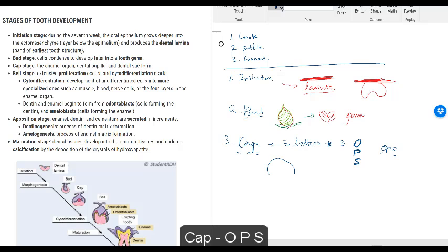For you to remember that OPS - those three different things happen in the cap stage, not in the initiation or bell or maturation stage - I'm going to draw you my awesome cap. What am I going to write inside? You probably guessed. I'm going to write OPS. Now you know for sure: enamel organ, dental papilla, dental sac, they are included in the stage of cap, not bell, not bud. Does this make sense? We are using everything we can: visualization, stupid 'oops' kind of mnemonics, and anything we can to really memorize it.